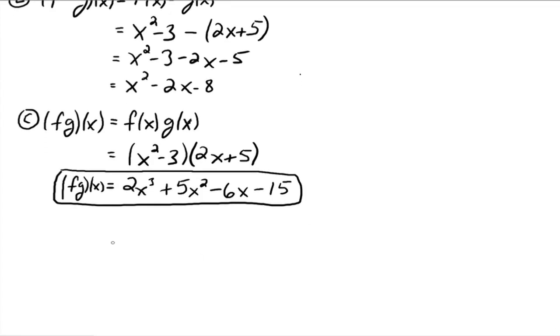Alright, one more. D. F divided by g of x. Again, write out what it's defined to be. f of x divided by g of x. x squared minus 3. And g is 2x plus 5. And that's about all we're going to really worry about. But except for one thing.